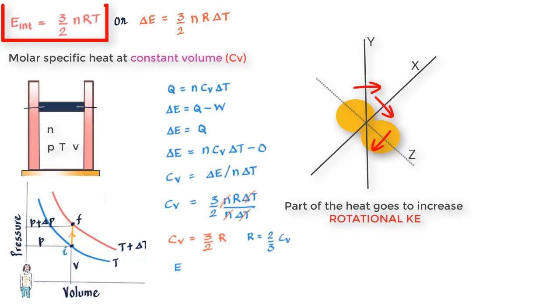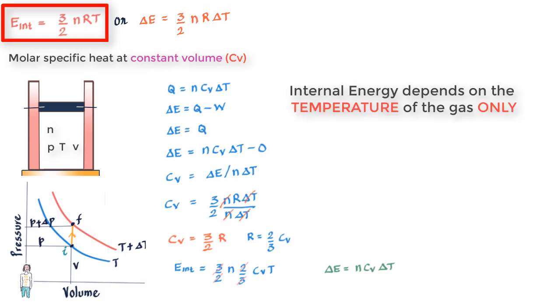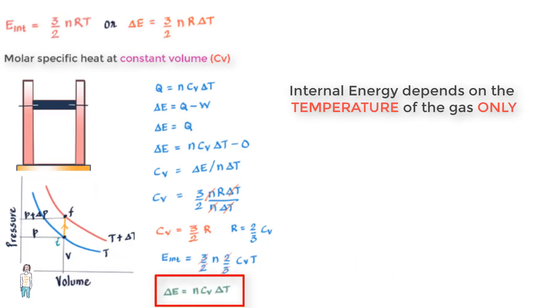If an enclosed ideal gas undergoes temperature change ΔT, the change in internal energy is ΔE = nC_V·ΔT. Once again, remember a very important conclusion of kinetic theory of gases: the internal energy of an ideal gas depends only on its temperature, and therefore any change in internal energy also depends on change in temperature only, no matter what process you adopt. Let us now find molar specific heat at constant pressure.